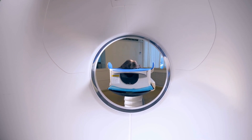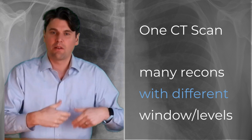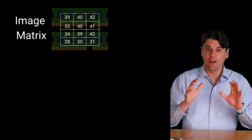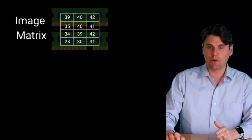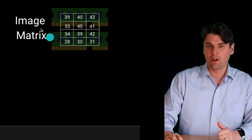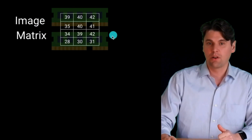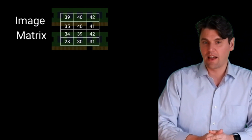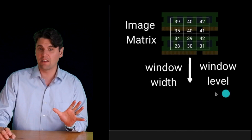A lot of times we're going to want to have many window level settings for one given acquisition, and we want to understand what's driving those different window settings. Inside the computer, after the image is reconstructed and any post-processing has occurred, there are just numbers stored in a matrix. Those numbers, like we talked about in our Hounsfield units video, are in a Hounsfield unit value — typically in a 512 or 1024 size matrix.